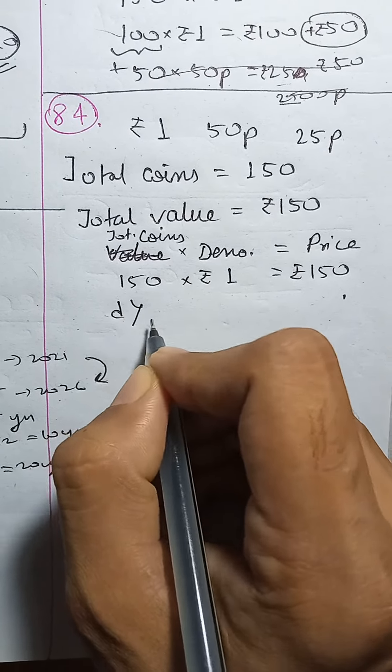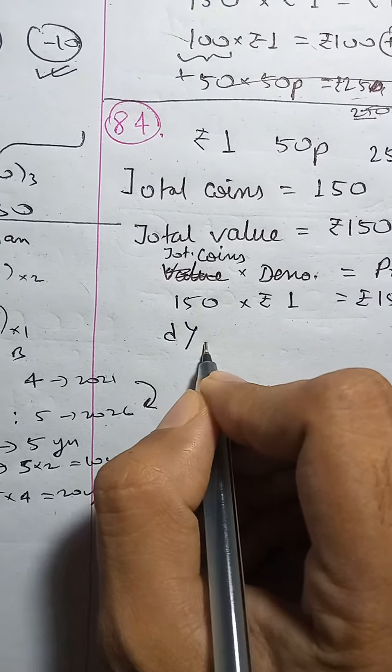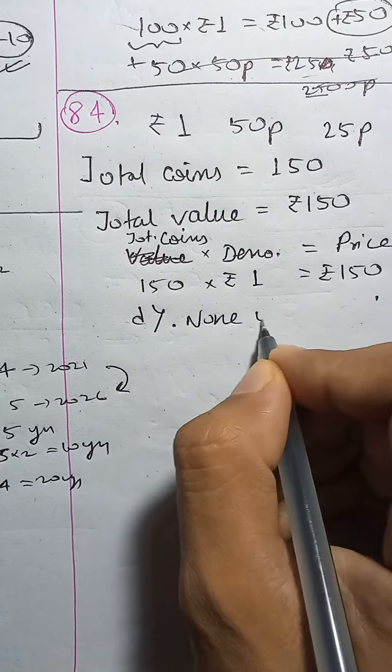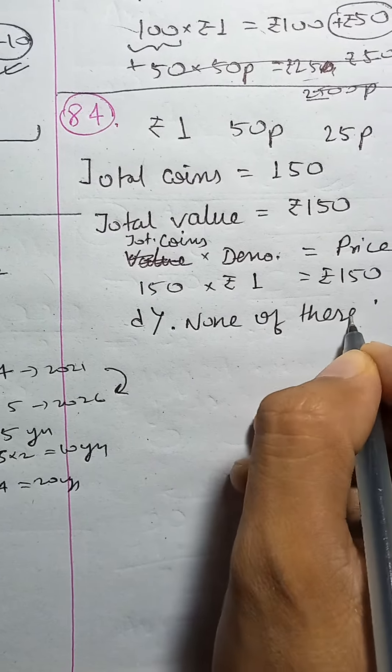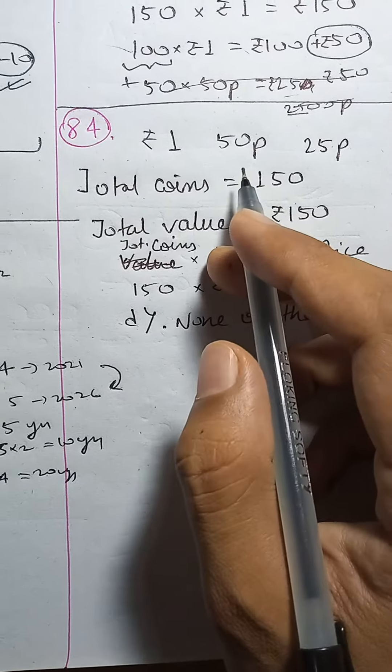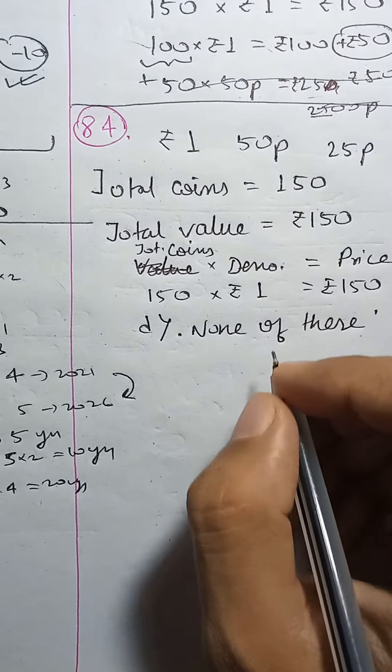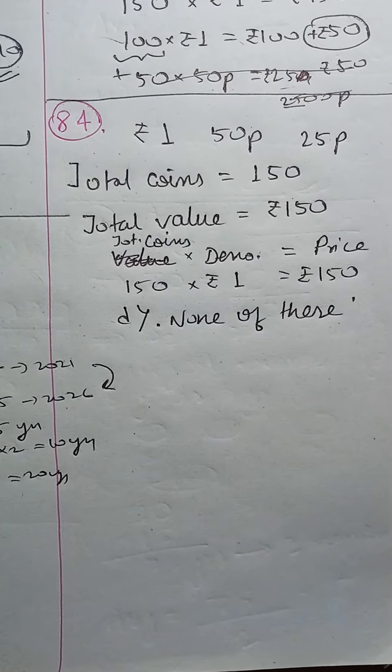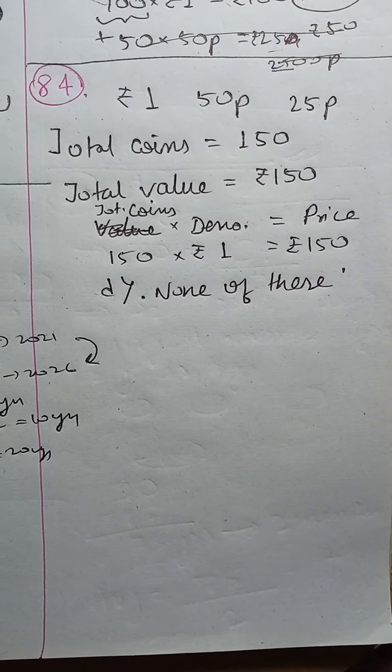Option D, none of these. None of these means 50 paise value is zero. Thank you for watching.